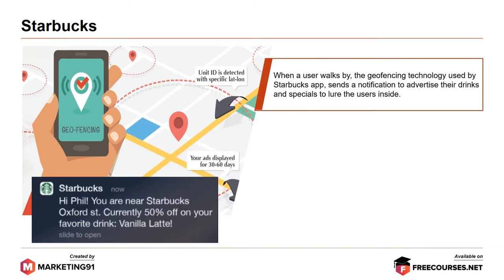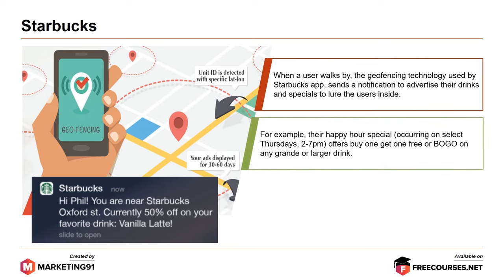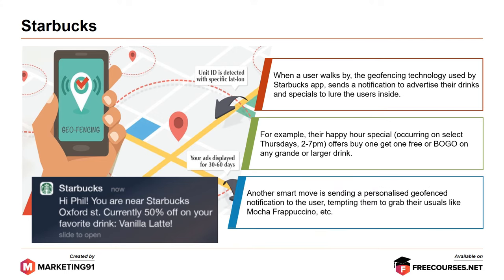Next, Starbucks. When a user walks by, the geofencing technology used by the Starbucks app sends a notification to advertise their drinks and specials to lure users inside. For example, their happy hour special — occurring on select Thursdays 2–7pm — offers a buy-one-get-one-free on any grande or larger drink. Another smart move is sending a personalized geofence notification to the user, tempting them to grab their usual, like the mocha frappuccino.